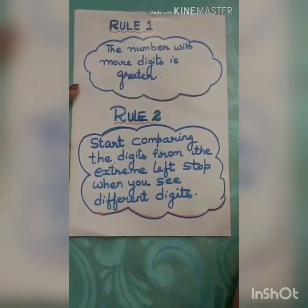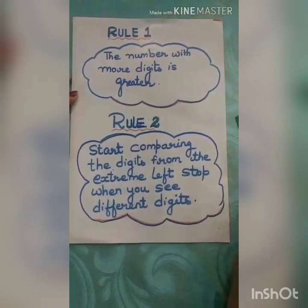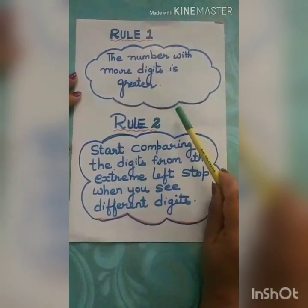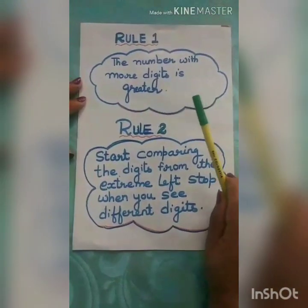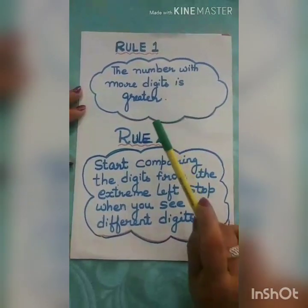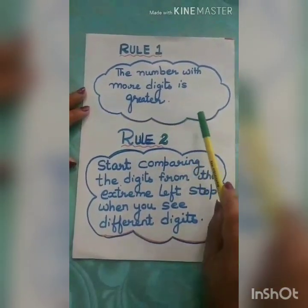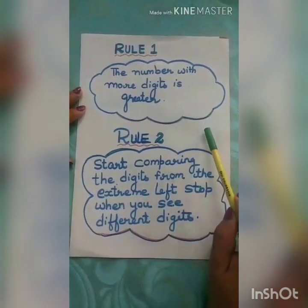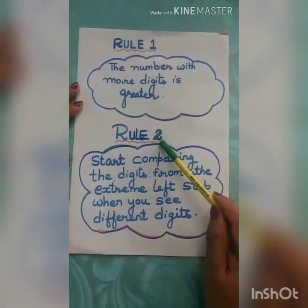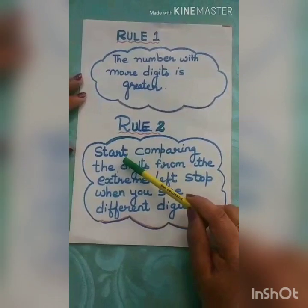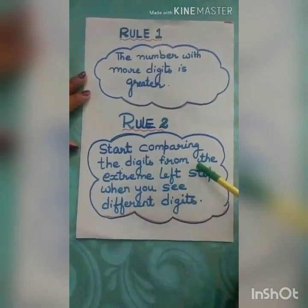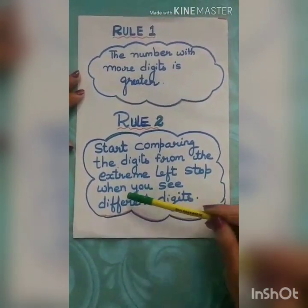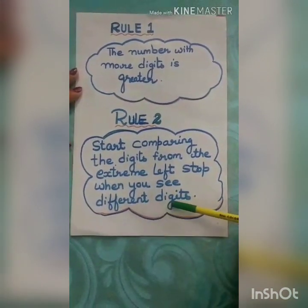Now we have to follow some rules when we arrange numbers in ascending order. First rule: the number with more digits is greater. When the number of digits are the same in two numbers, then we follow rule number 2: start comparing the digits from the extreme left, and stop when you see different digits.